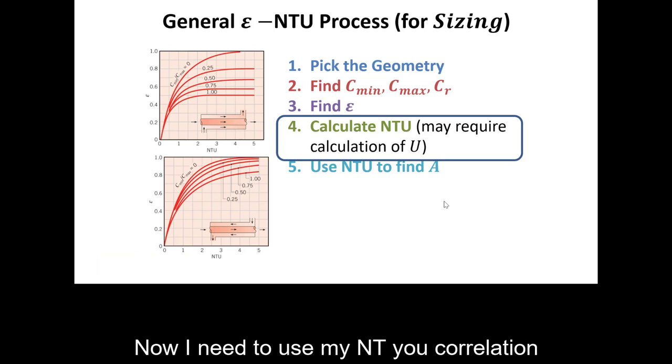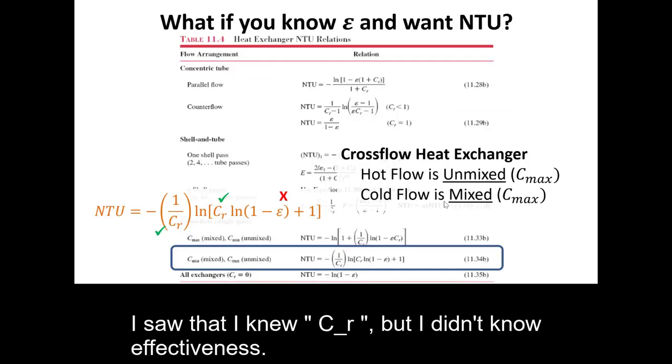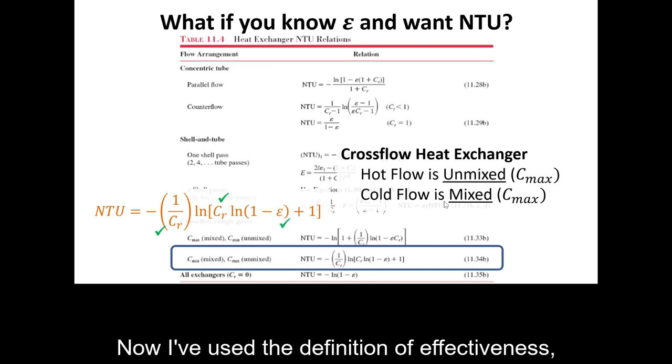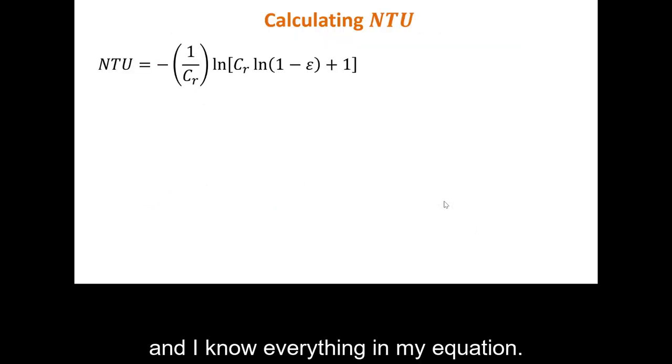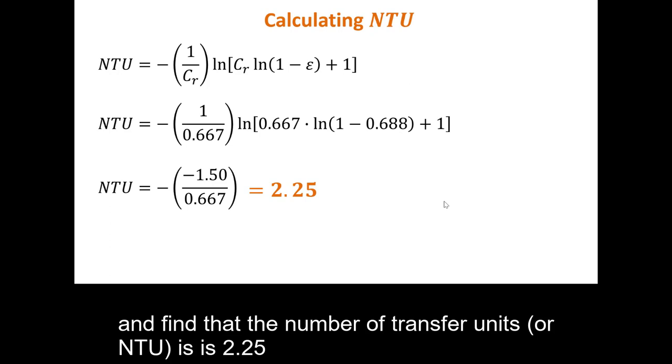Now, I need to use my NTU correlation to find NTU. The last time I looked at this equation, I saw that I knew big C sub R, but I didn't know effectiveness. But now, I've used the definition of effectiveness and I know everything in my equation. I can sub some numbers into my calculator, simplify it a little bit, and find that the number of transfer units or NTU is 2.25.